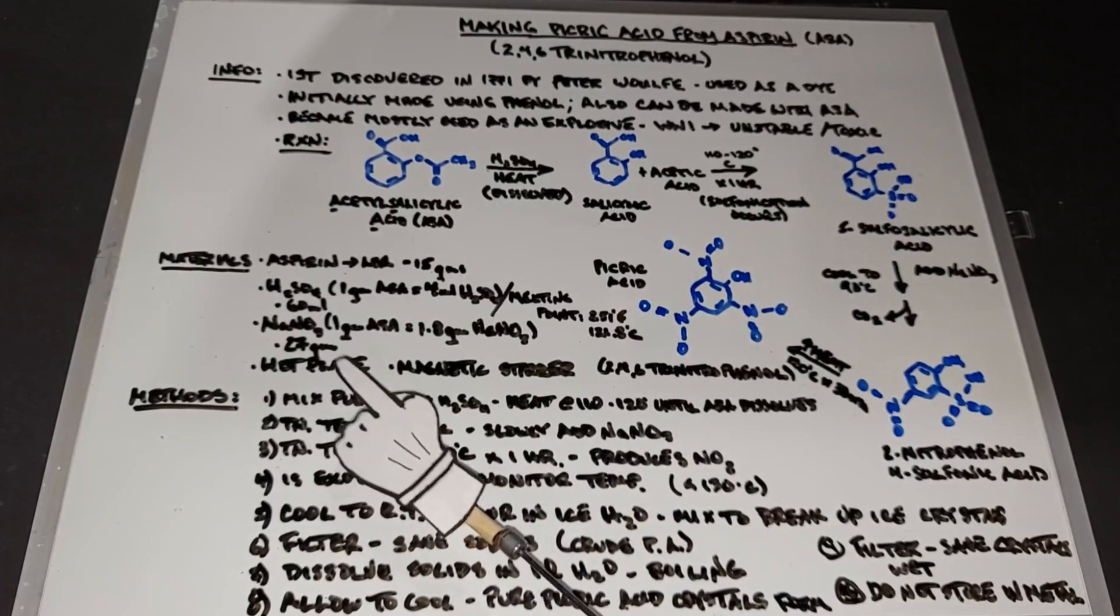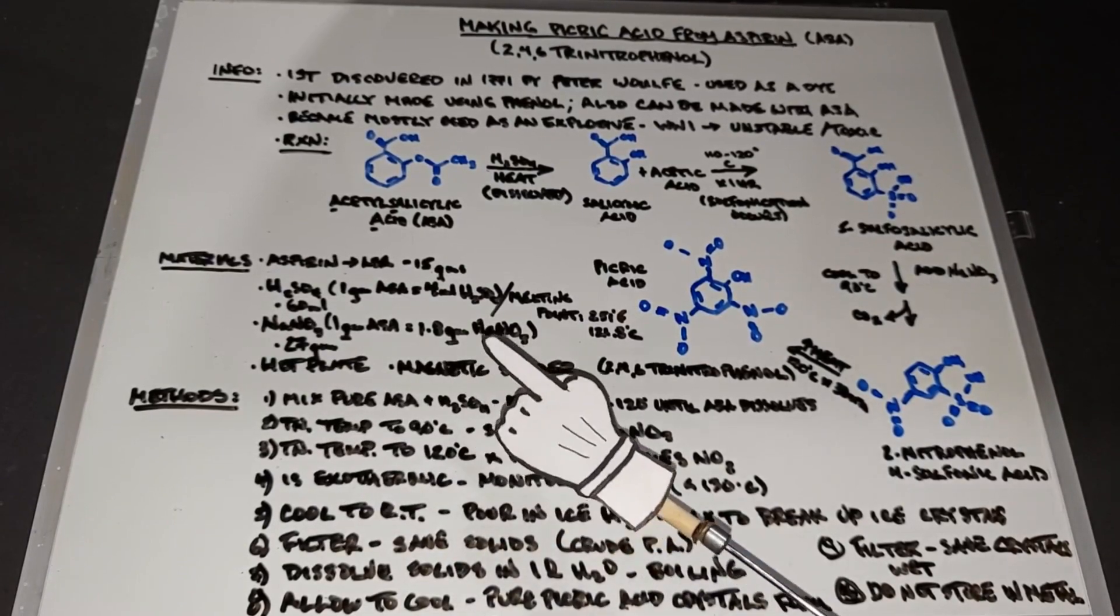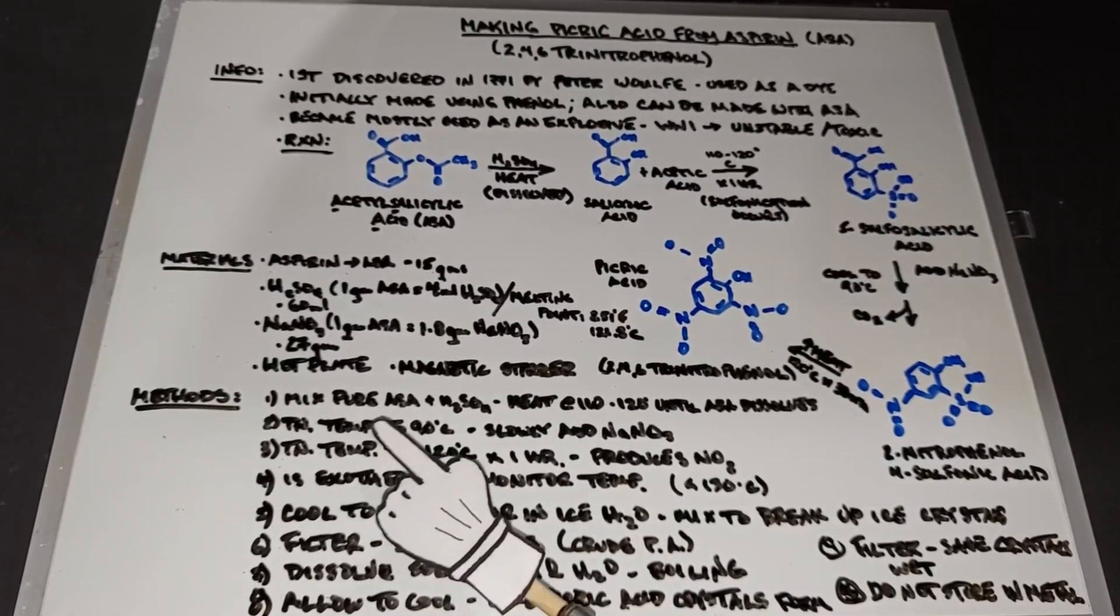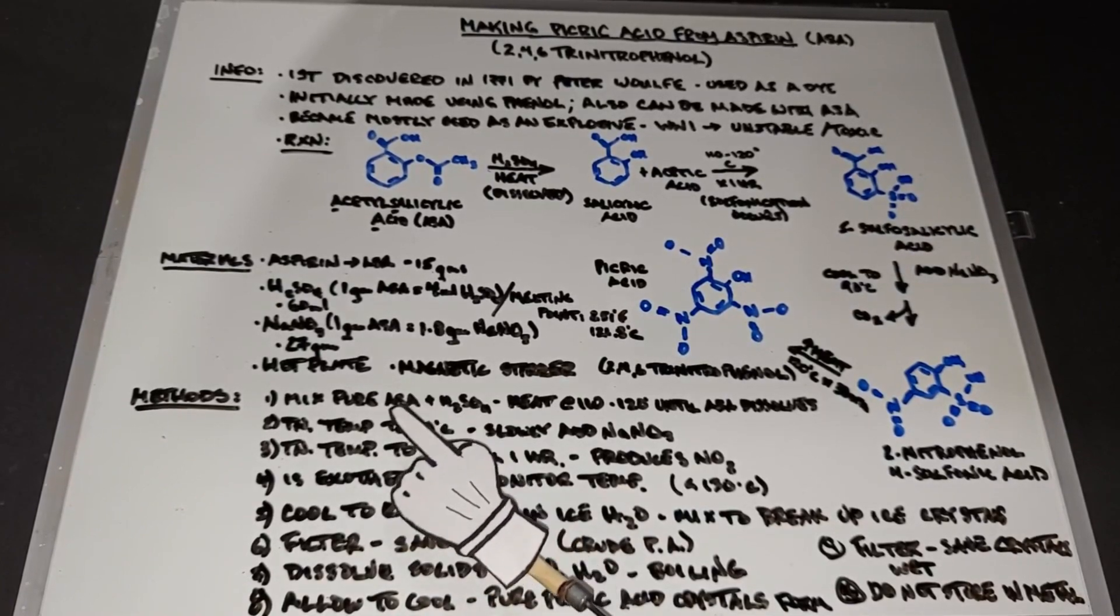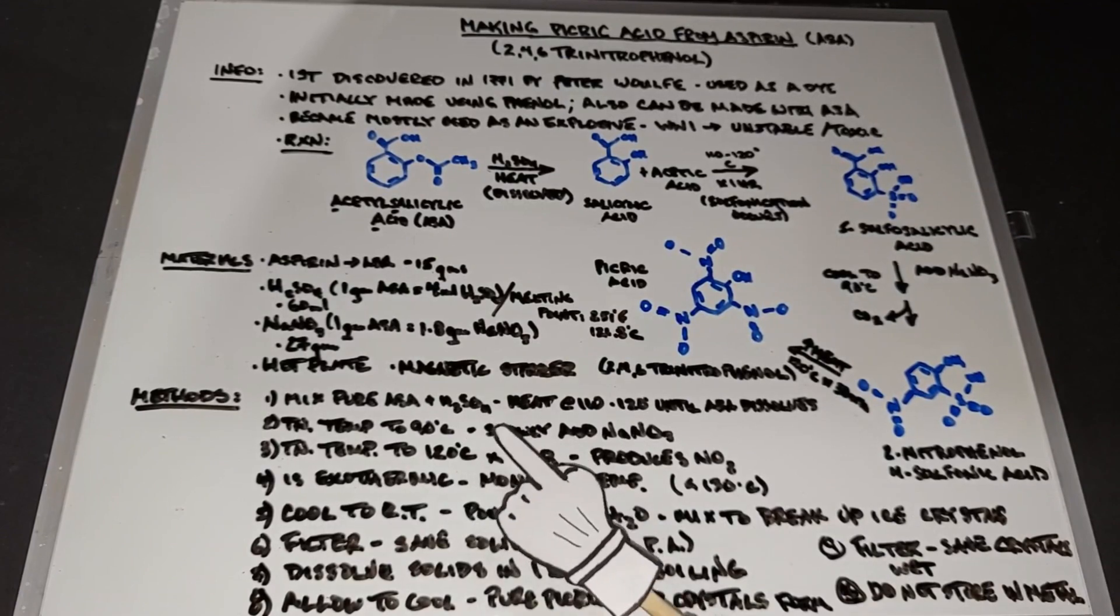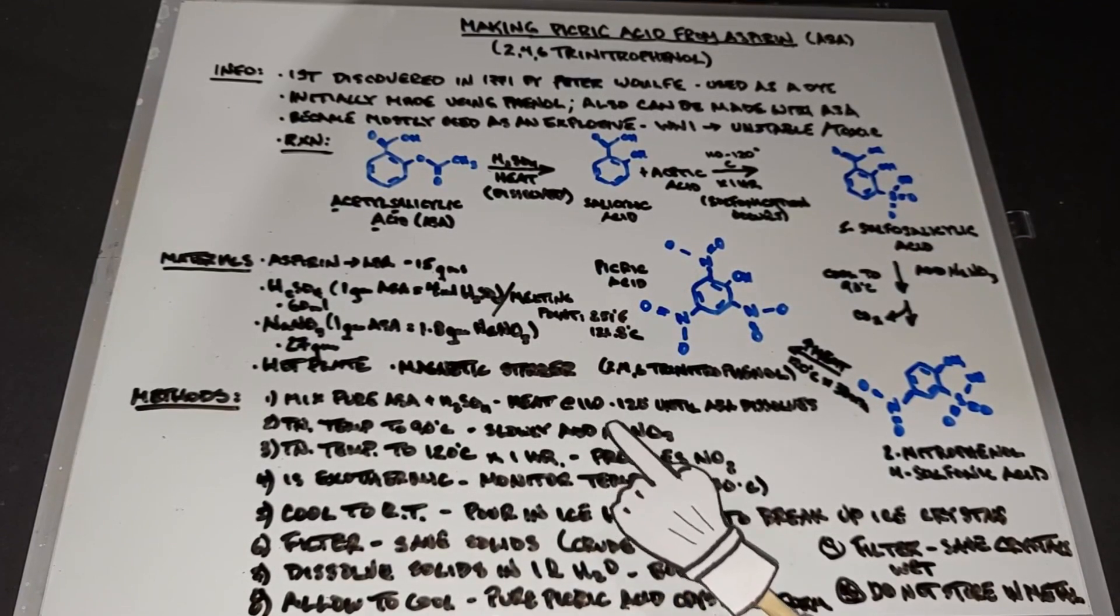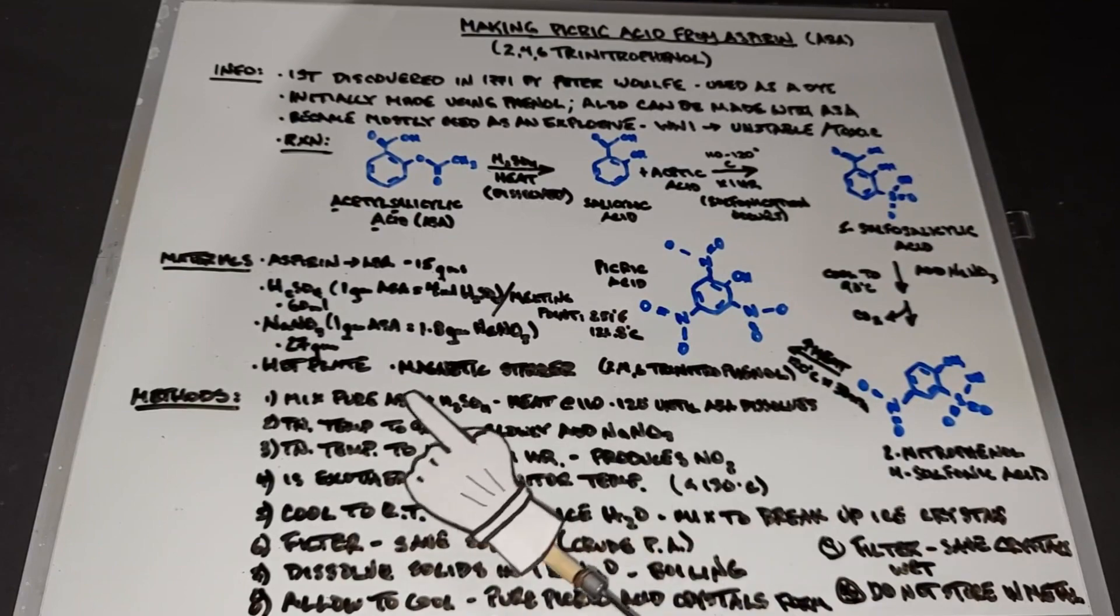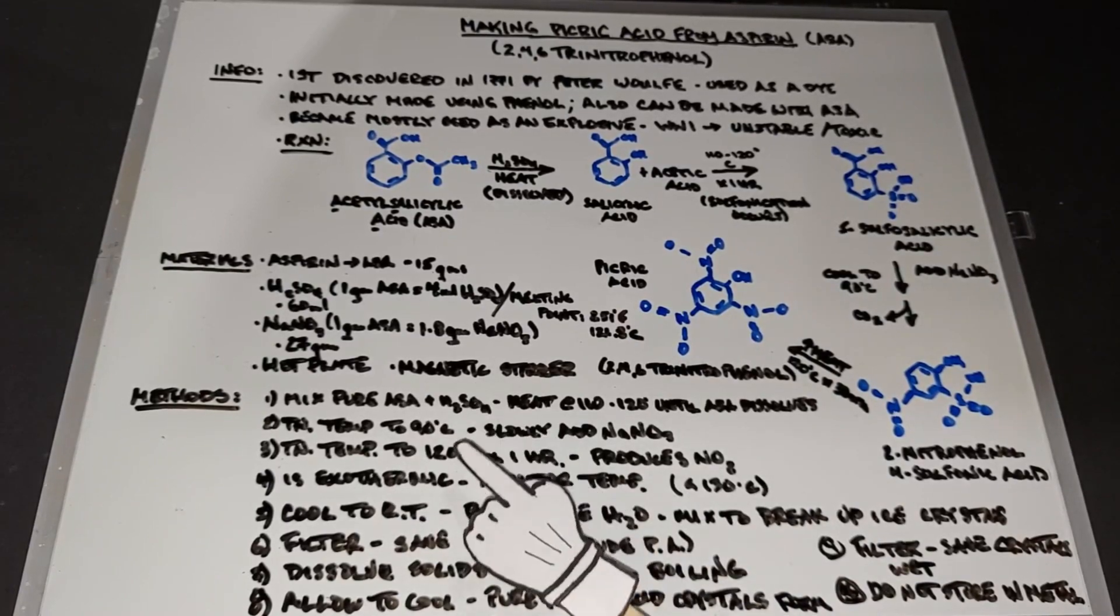We also need a hot plate to do all the heating and a magnetic stirrer to keep things moving. In our methods, once we've recrystallized the acetylsalicylic acid, we're going to mix it with the 60 milliliters of sulfuric acid and heat that to around 110-120 degrees Celsius until all of the ASA dissolves in the sulfuric acid.